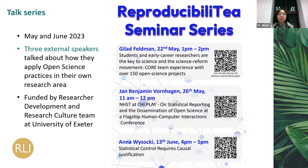Earlier this year, we received funding from the Researcher Development and Research Culture team at the University of Exeter, which allowed us to invite external speakers to talk about how they apply open science in their own research. We have had speakers from Hong Kong, Denmark, and the US, each working in very different areas like machine learning, computer-human interaction, and decision psychology and statistics. These seminars are open to all students — not only in the psychology department, but to university students and staff across different disciplines — so the audience can see how other fields have their own ways to make research more open and credible.